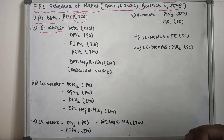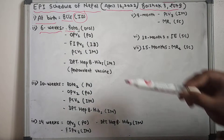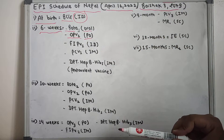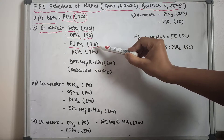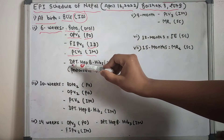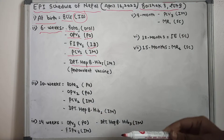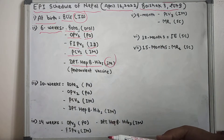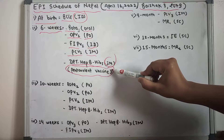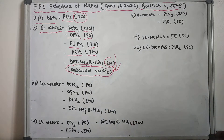At six weeks after birth, the child is given the first dose of Rota vaccine (orally), the first dose of OPV — Oral Polio Vaccine (orally), the first dose of fIPV — Fractionated Inactivated Polio Virus (intradermally), the first dose of PCV (intramuscularly), and the first dose of the Pentavalent vaccine — DPT, Hepatitis B, and Haemophilus influenzae b — given intramuscularly.